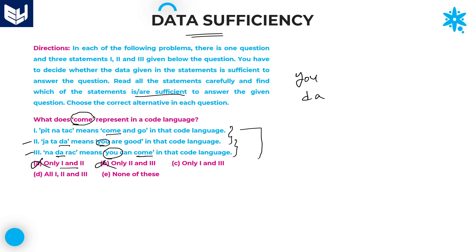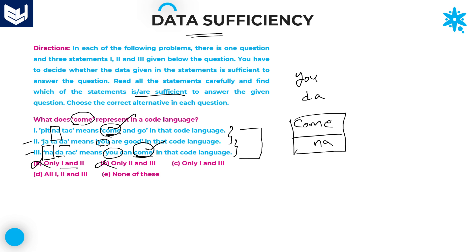Now combine statements 1 and 3. Only one word is common in both — that is 'cum'. The remaining two words are not shared. Now find the common code in statements 1 and 3 — that is 'na'. 'na' is the common code present in both statements 1 and 3. Therefore, 'cum' equals 'na'. You get the answer by combining statements 1 and 3, so option C is the right answer.